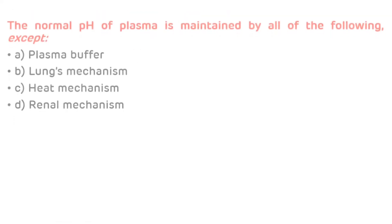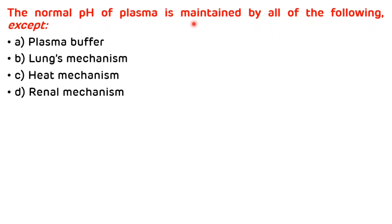MCQ 2: Normal pH of plasma is maintained by all of the following EXCEPT — options: plasma buffer, lungs mechanism, heat mechanism, renal mechanism. The three regulatory mechanisms are: buffer system, respiratory mechanism, and renal mechanism. So the correct answer is C — heat mechanism.